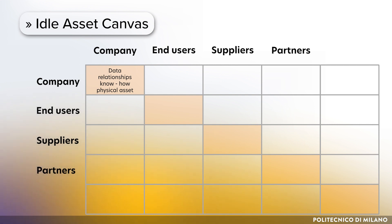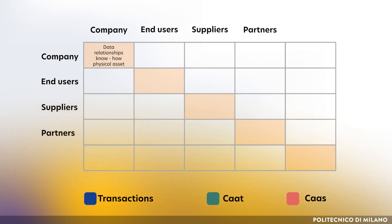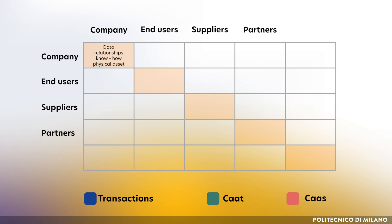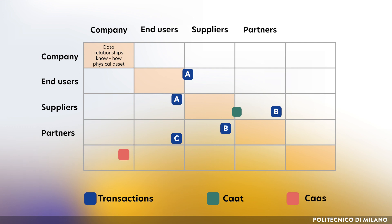At this point, we take three sets of sticky notes in three different colors: one for possible transactions, another for client-as-a-target strategies, and a third for client-as-a-source strategies, and you try to see them in the matrix. This will be the starting point for the next step.